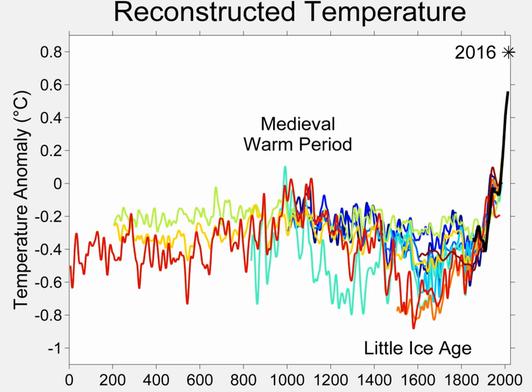There was a Little Ice Age centered on AD 1700. There was a Medieval Warm Period centered on AD 1000, though the exact timing and magnitude are uncertain and may have shown regional variation.